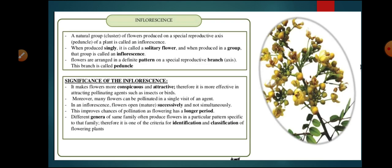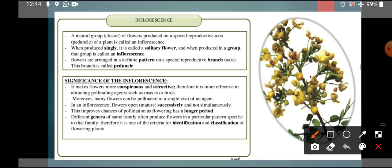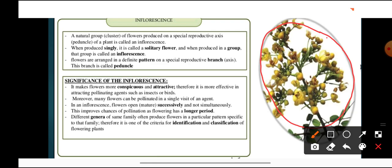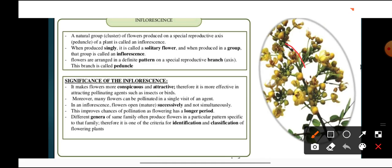First we will do the topic inflorescence. What is meant by the term inflorescence? Inflorescence means the axis bearing cluster of flowers — this is the group of flowers. The axis bearing group of flowers is known as inflorescence. Sometimes flowers are present singly — that is known as a solitary flower. But if flowers are present in groups, this is known as inflorescence. The axis bearing cluster of flowers is known as peduncle.